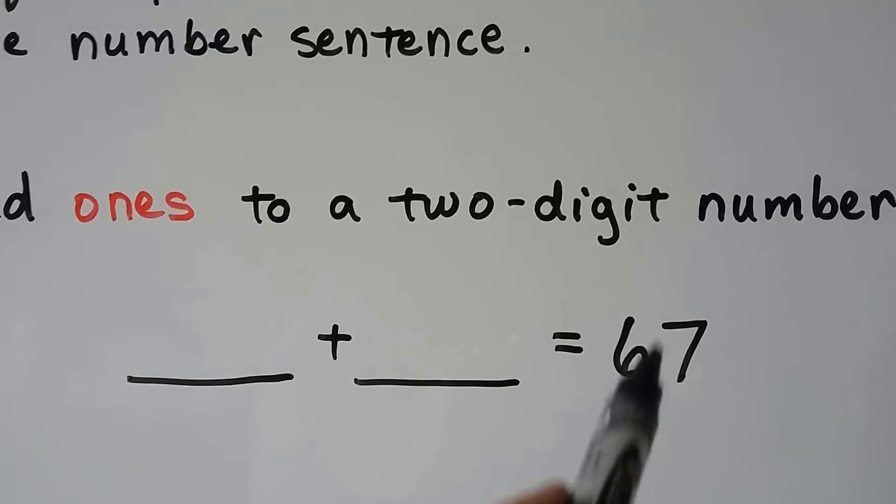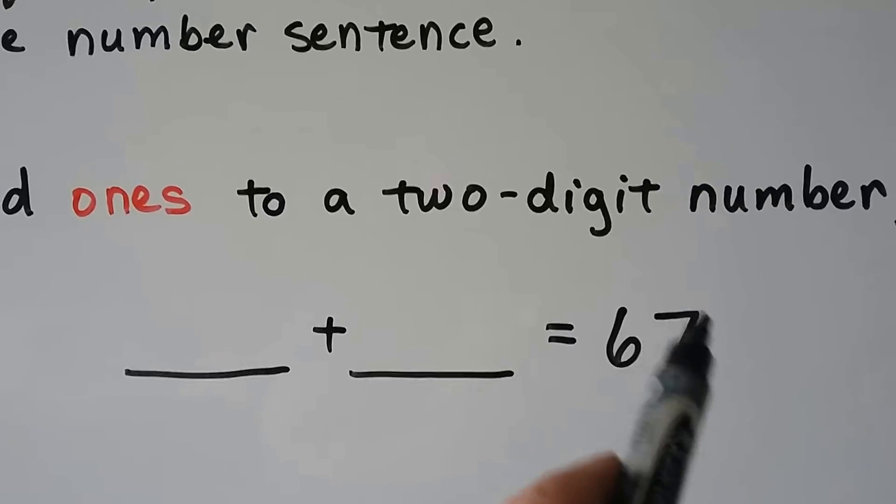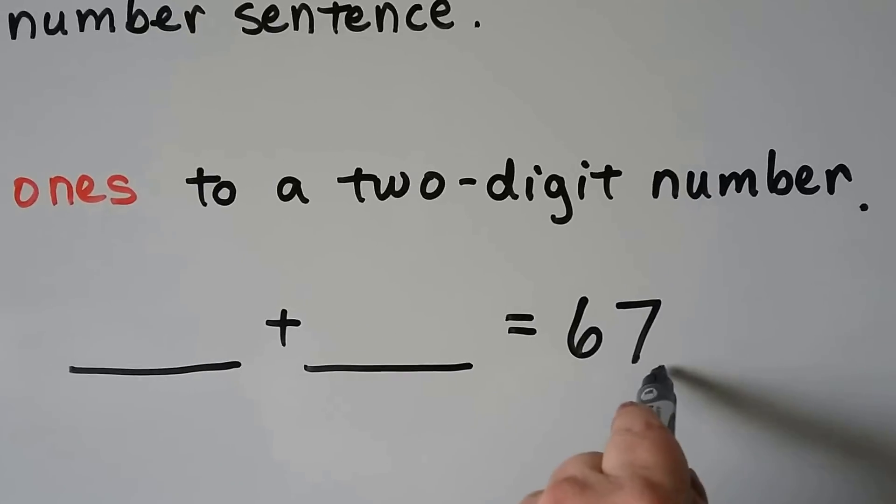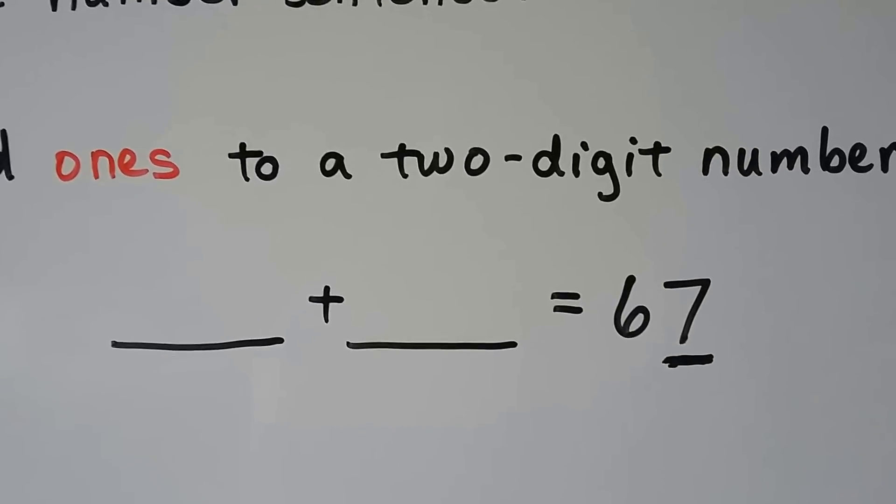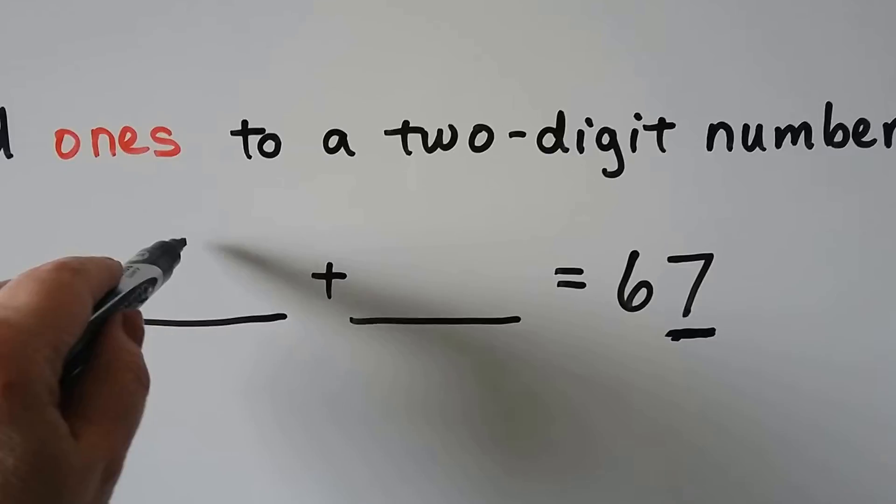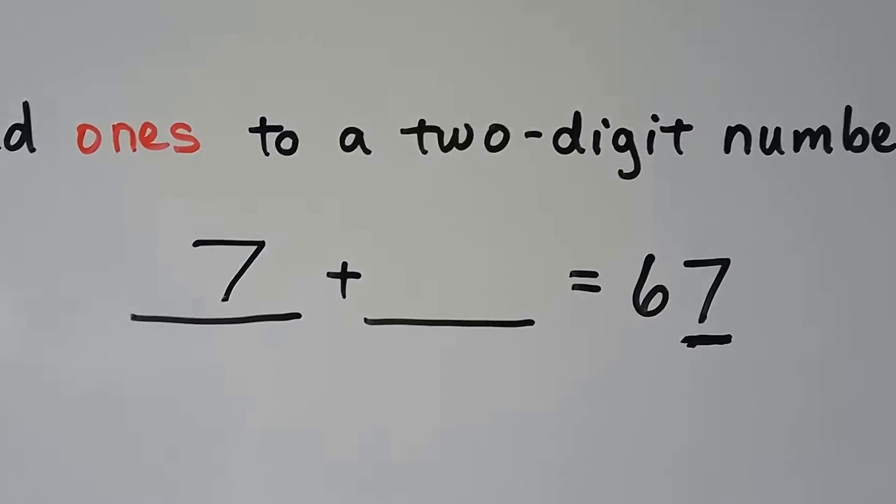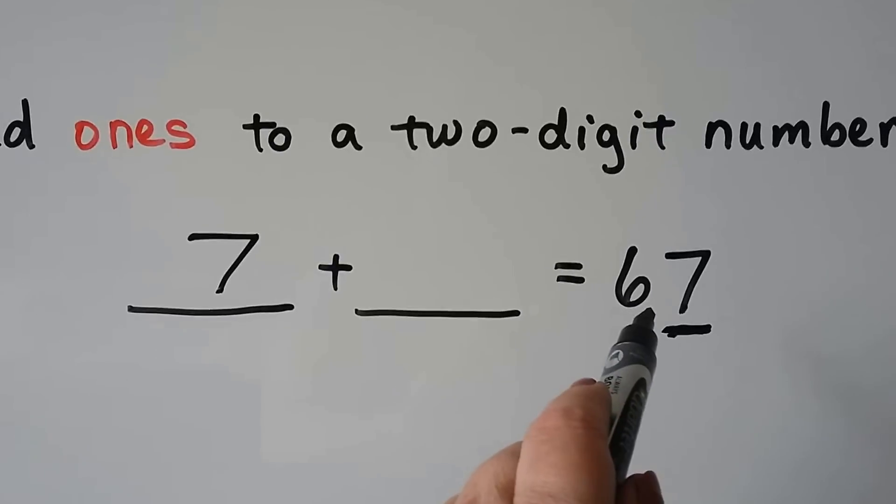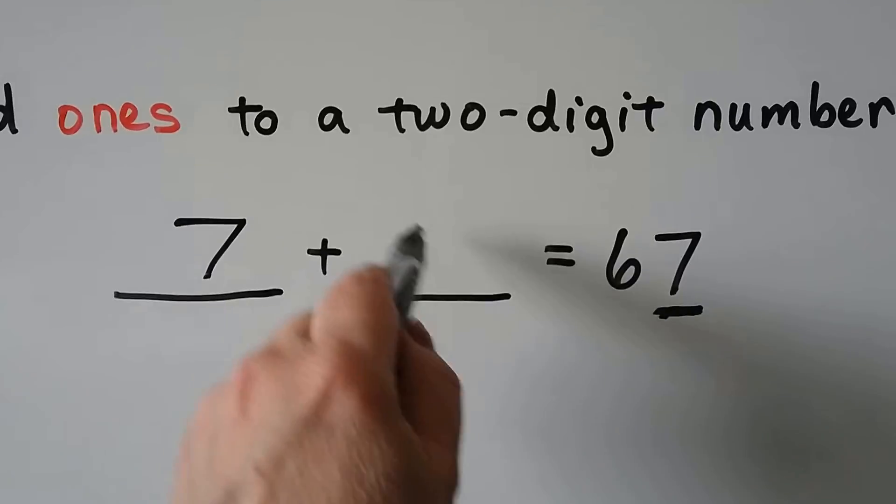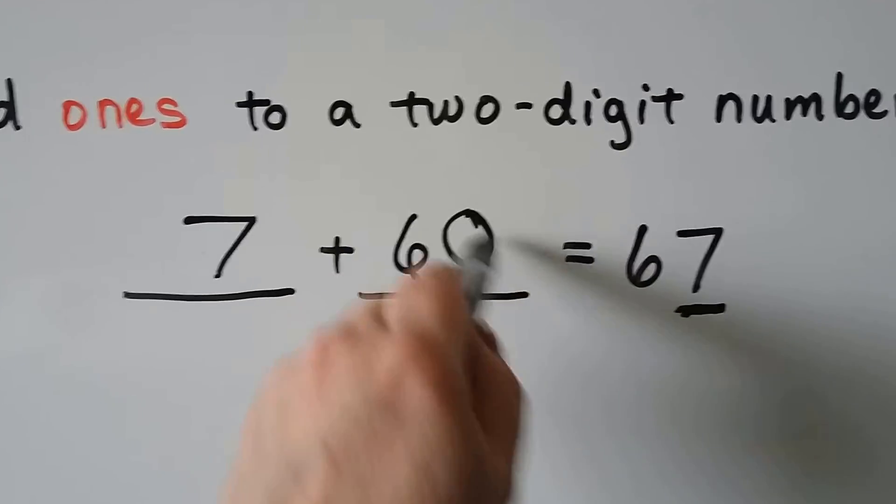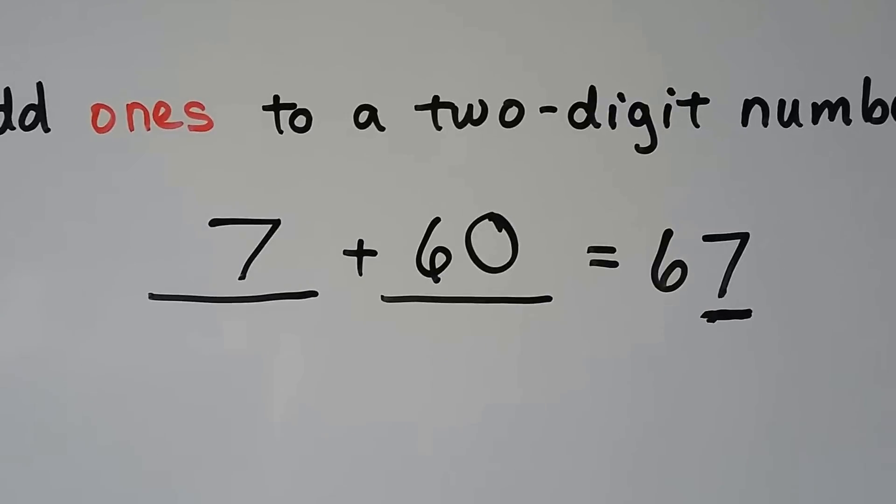So we can only have 0 to 7 ones because that's how many 1s are here. So we can add 7 as the 1s. And our 2-digit number, now that we took those 7 ones away, we have 0 ones. We can add it to 60 and do 7 plus 60 is equal to 67.